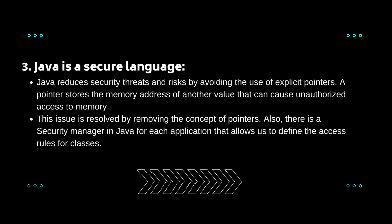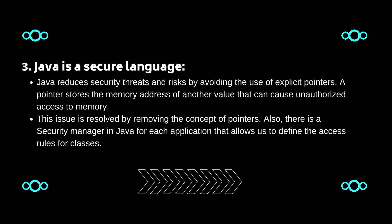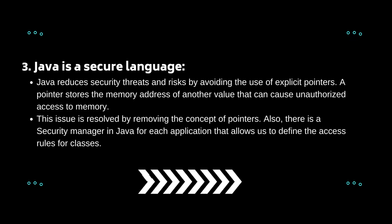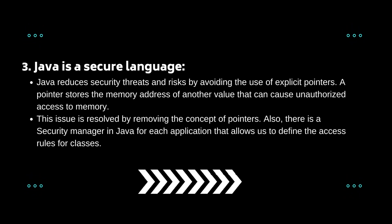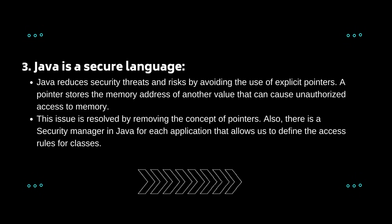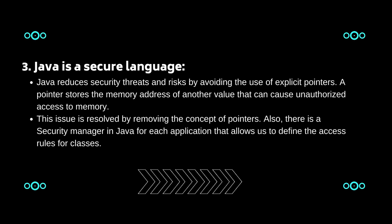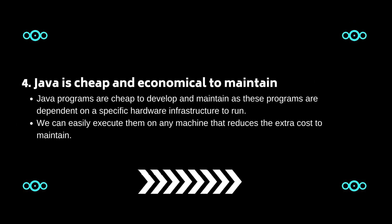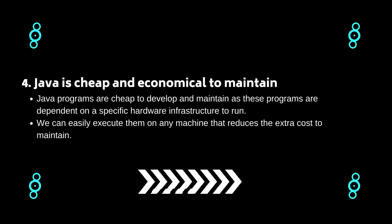Three: Java is a secure language. Java reduces security threats and risks by avoiding the use of explicit pointers. A pointer stores the memory address of another value, which can cause unauthorized memory access. This issue is resolved by removing the concept of pointers. Also, there is a security manager in Java for each application that allows us to define access rules for classes.